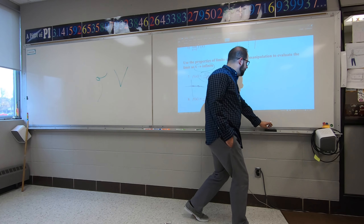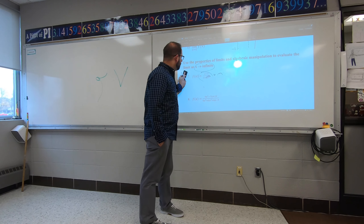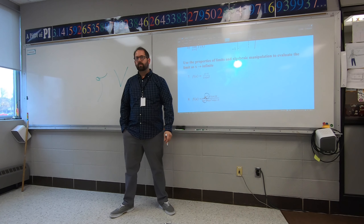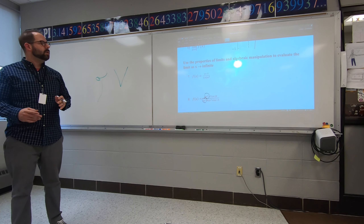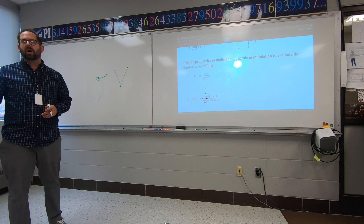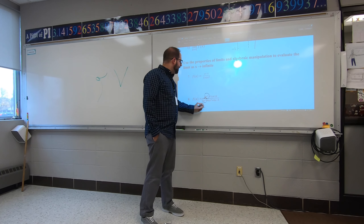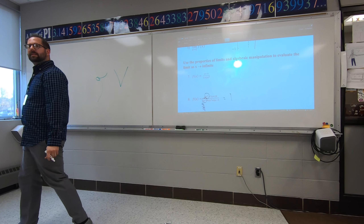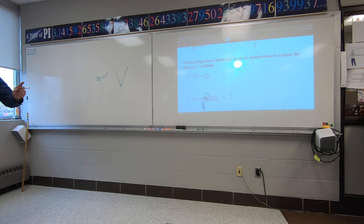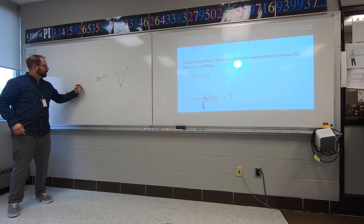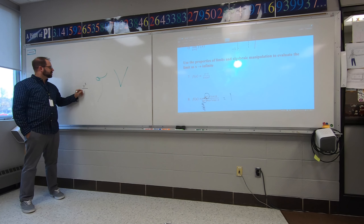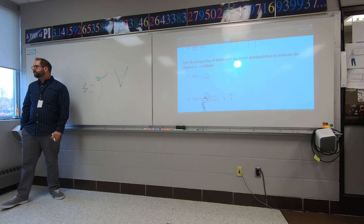The bottom is bigger on that one too, so horizontal at zero. On the next one, the top and bottom are the same power — that's the next rule: if the powers are equal, you divide the leading coefficients. In this case it's nine divided by nine, which equals one. So the horizontal asymptote is at one.